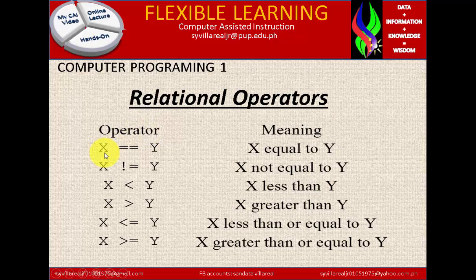Now we have here the relational operators. So we have operator x equals to y, which is exactly equals to y. And we have x is not equal to y, x is less than y, and x is greater than y. So we have also x is less than equal to y, and x is greater than equal to y. So the meaning of that is right here on the right side.